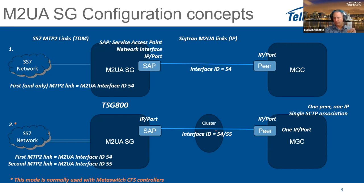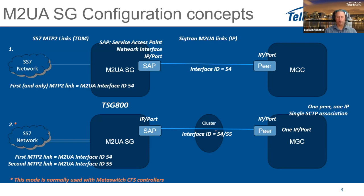The MTP2 side is very simple and straightforward — you decide which time slot and which T1. If you have multiple to configure, you add more MTP2 links to your configuration. By themselves they won't be used until you attach them with M2UA.